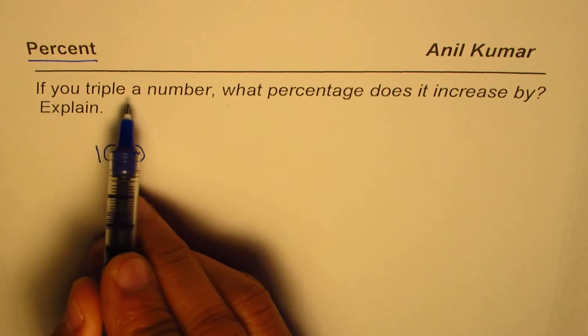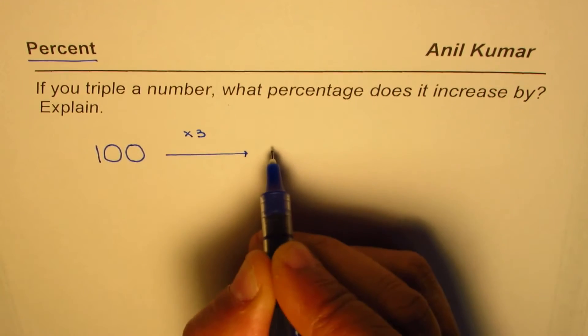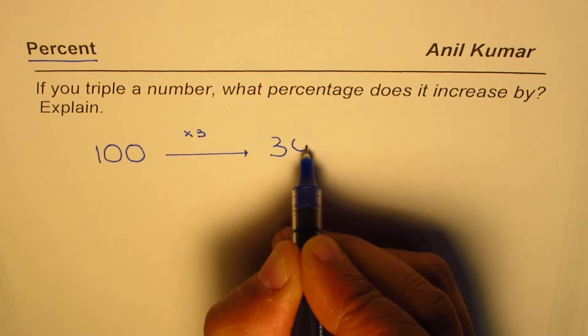Now, if you triple the number, what happens? If you do times 3, triple is times 3, it becomes 300. So we have 300 now.